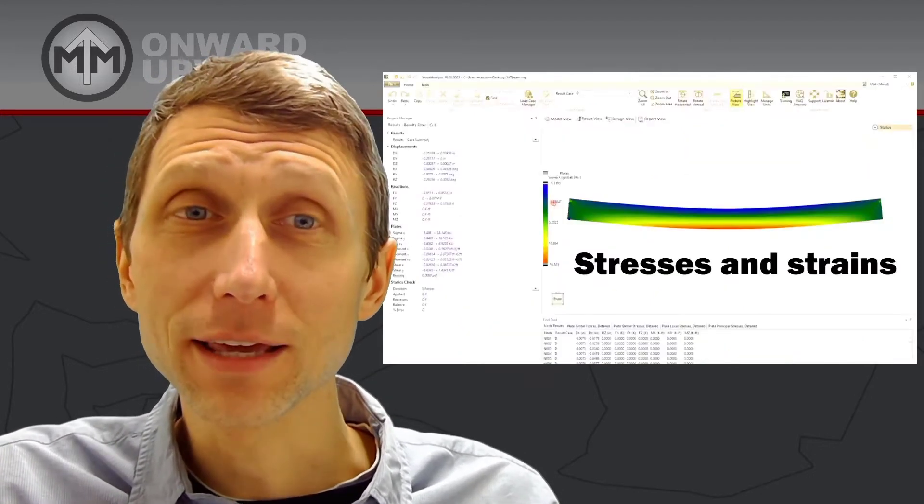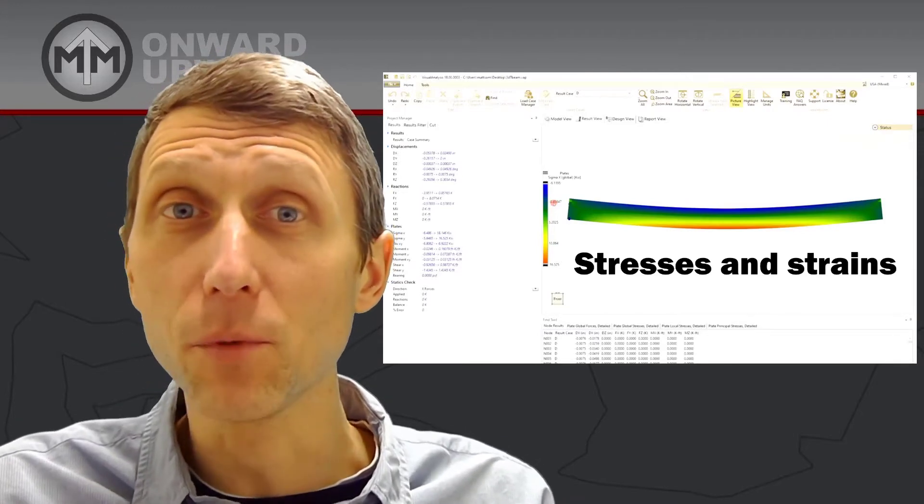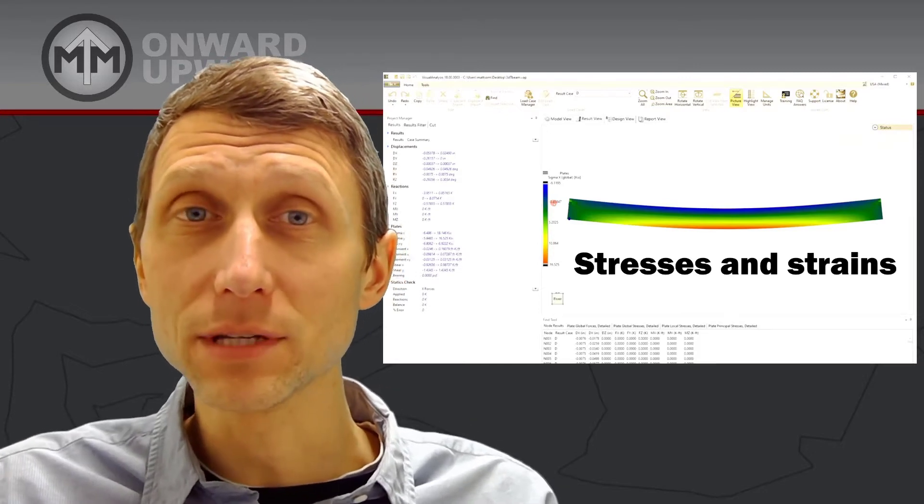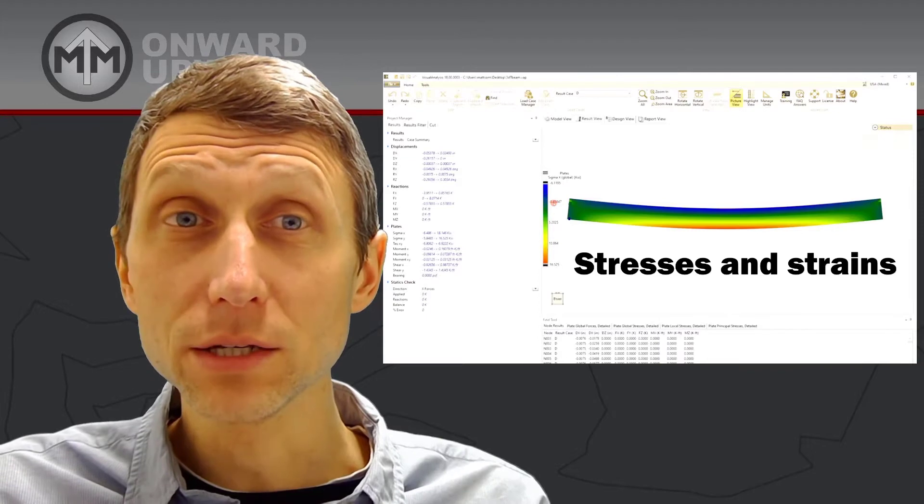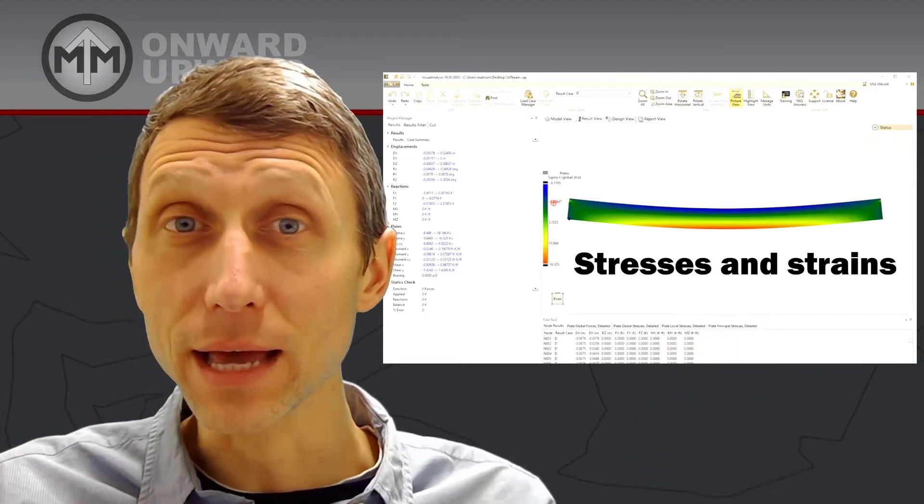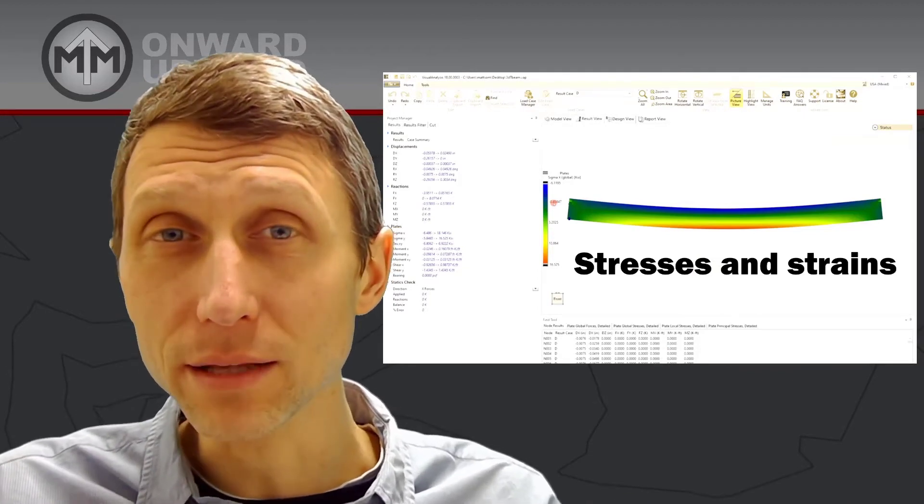It also looks like stress problems. Remember P over A for axial stress and MY over I for bending stress? This gives us tension and compression. We need to know: on the bottom of this beam, is this tension or compression, and how does that compare to the material's yield strength or ultimate strength?